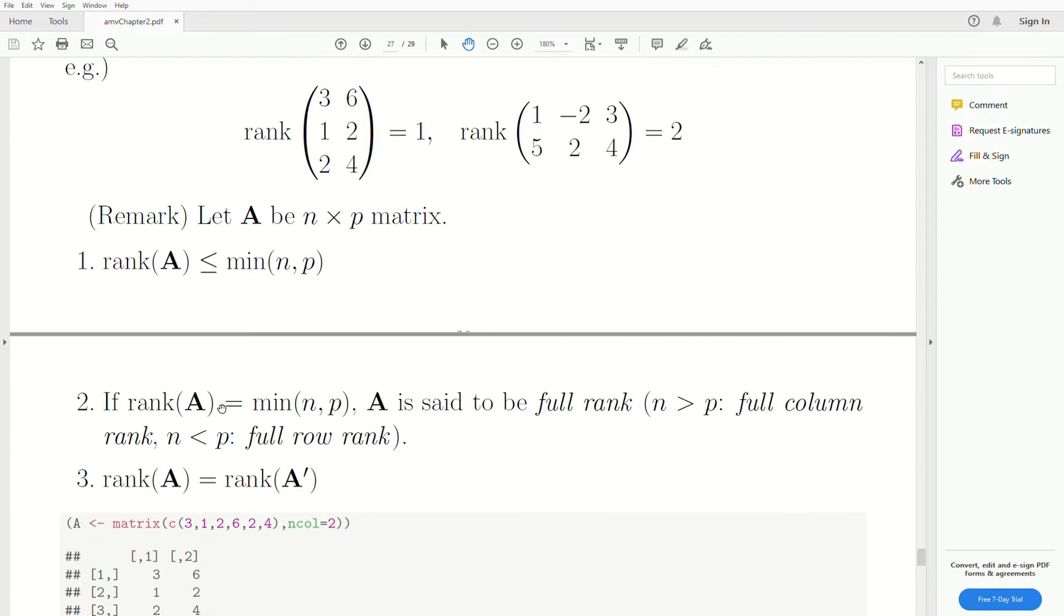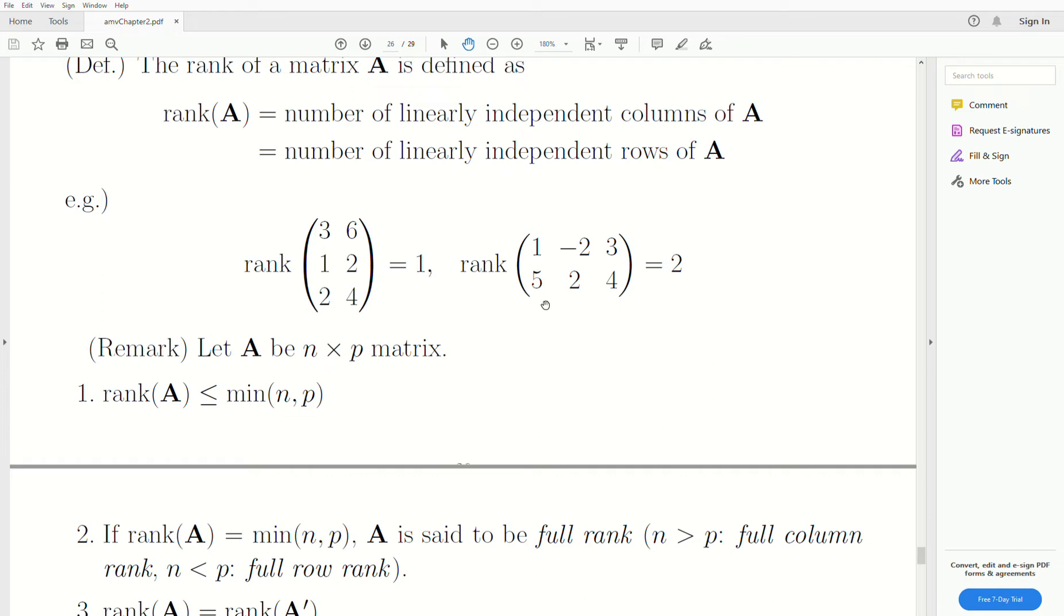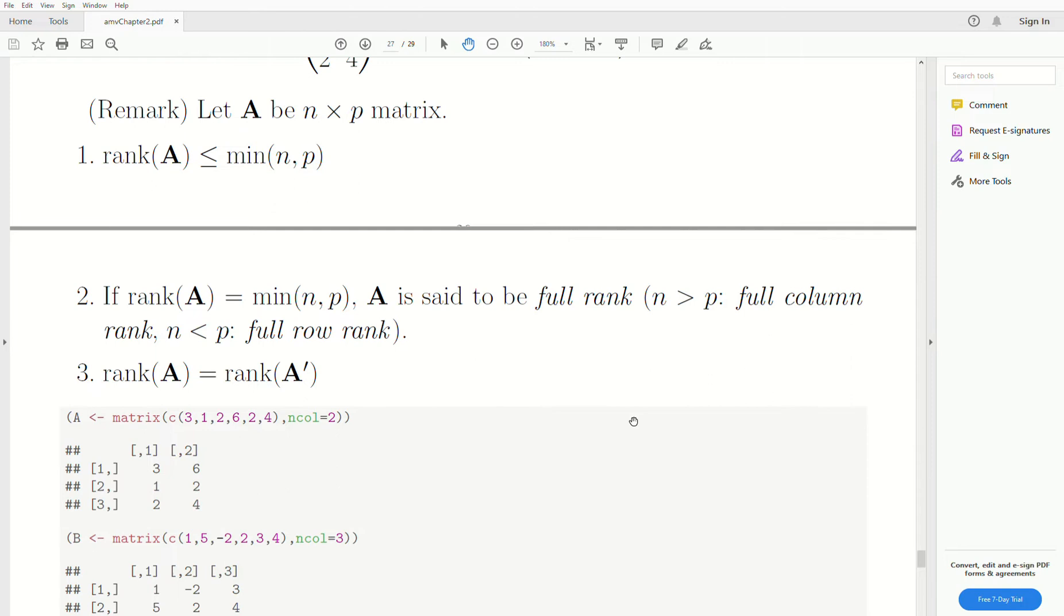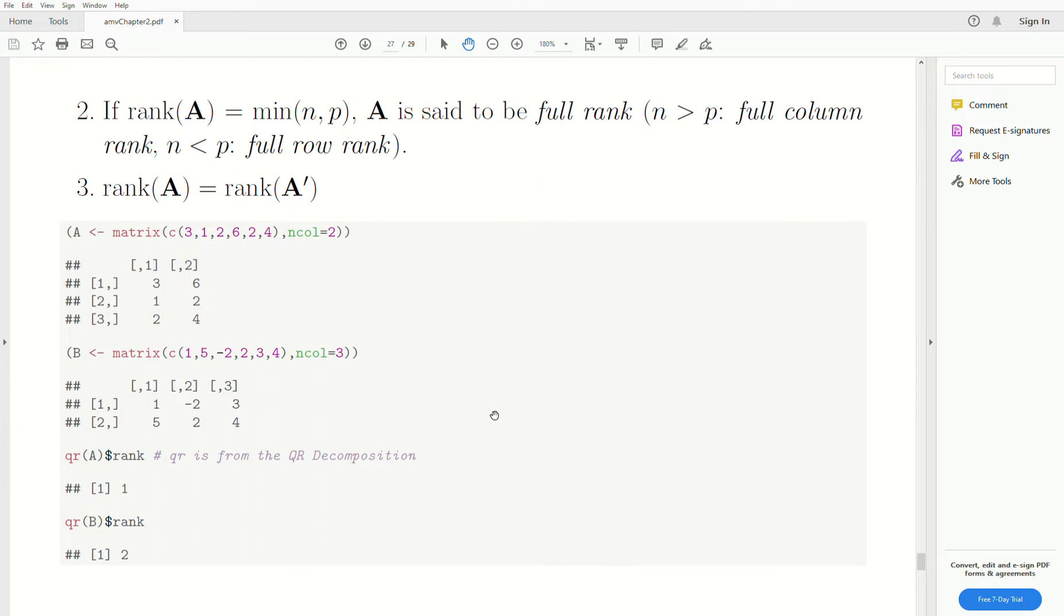Now if the rank is equal to N or equal to P, then we call it a full rank. Now, me personally, I like to either call it full column rank or full row rank, depending upon what it is. So this matrix B up here is full row rank, right? It equals two, which is the N. And here, this is not full rank. It's not full column rank, full row rank. It just has a rank of one. Now the rank of A is equal to the rank of the transpose.